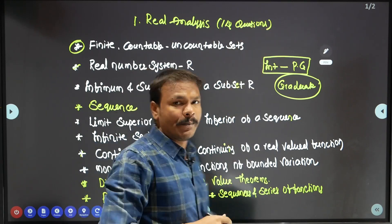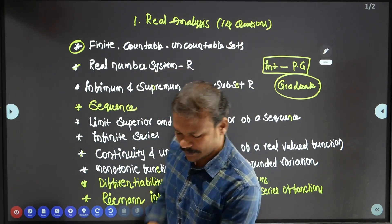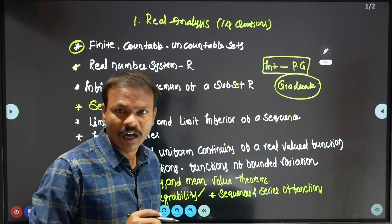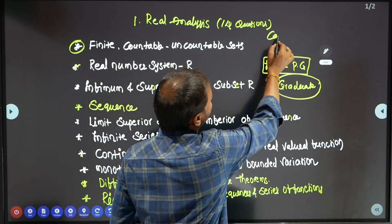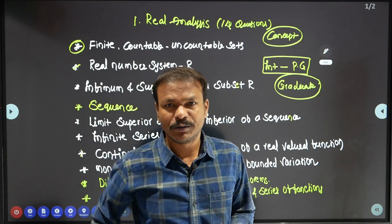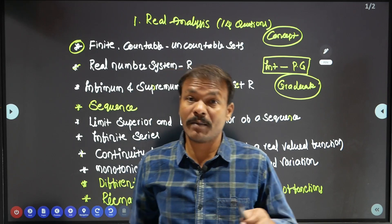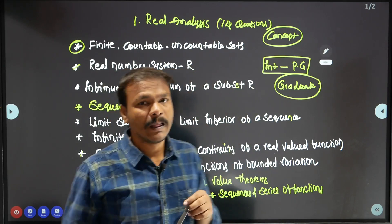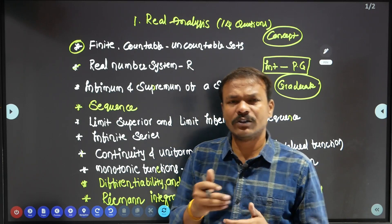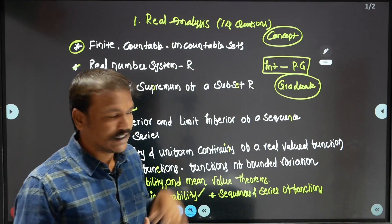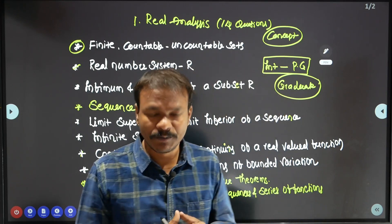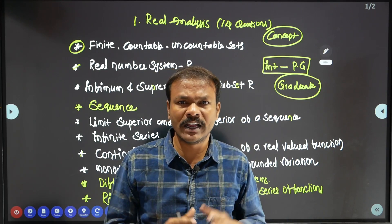There are 14 questions for AP Junior Lecturers. Real Analysis is very important for this examination — students are often afraid of real analysis, but it spans from intermediate to degree level content and is the most important topic for the exam.